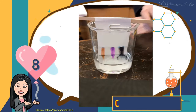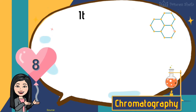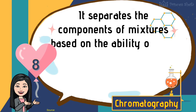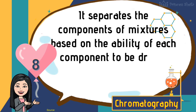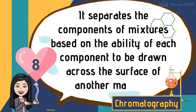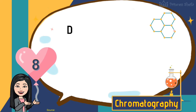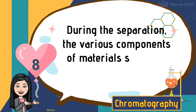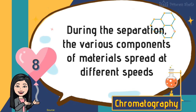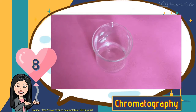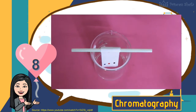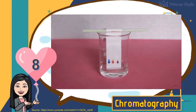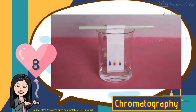Eighth is chromatography. It separates the components of mixtures based on the ability of each component to be drawn across the surface of another material. During the separation, the various components spread at different speeds. This process is used to find out what substances are composed of by separating compounds into their various components, and its use affects everything from what we eat to how to fight disease.